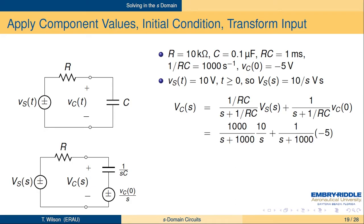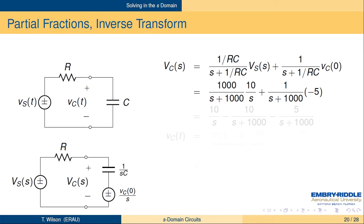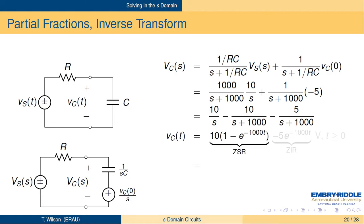We do partial fractions on the first term: something over S plus something over S plus 1,000. The result is 10 over S minus 10 over S plus 1,000, and then the minus 5 over S plus 1,000 just tags along. We inverse transform to find VC of T. The first two terms turn into 10 times (1 minus e to the minus 1,000 T) — we call that the zero-state response. The last term turns into minus 5 e to the minus 1,000 T — we call that the zero-input response. The zero-state response is what we would have gotten if there had been no initial voltage on the capacitor; it's due to the input. The zero-input response is what we would have gotten if there had been no input — only the minus 5 volts across the capacitor to start with. This equation holds for T greater than or equal to zero; it was minus 5 volts for T less than zero.